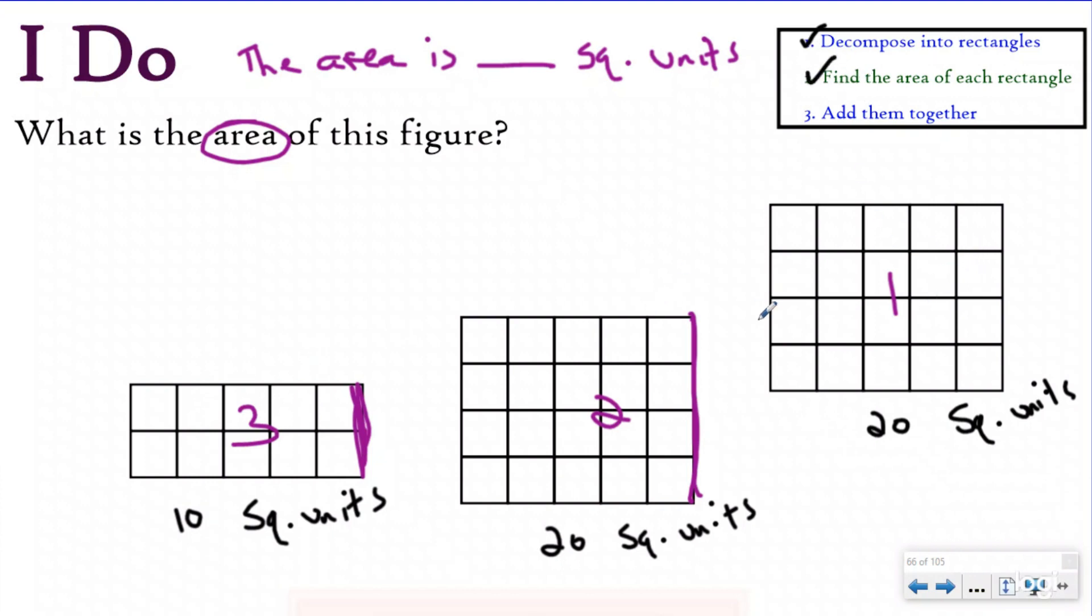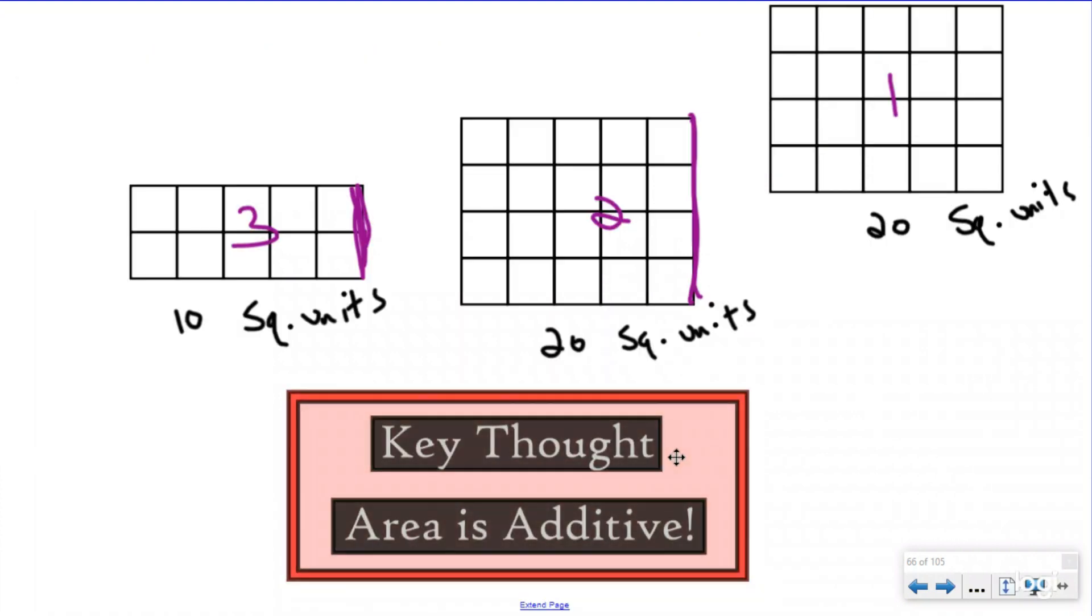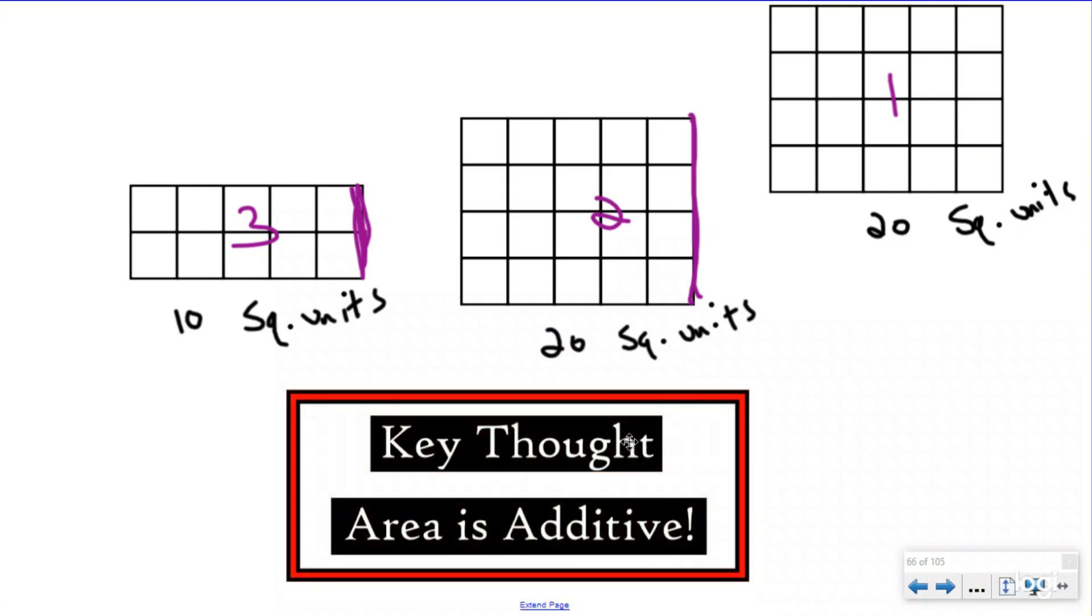Now all I need to do is add them together. So the total area is 20, 40, 50. The total area of my figure was 50 square units. Once I decompose them and found the area of each piece, I can add those together. That leads us to our key thought today, which is area is additive. Multiplication is repeated addition. So once we multiply or skip count to find all the pieces, we can just add those pieces together and that will give you the total area. Area is additive. That's going to help you find the area of these irregular figures.